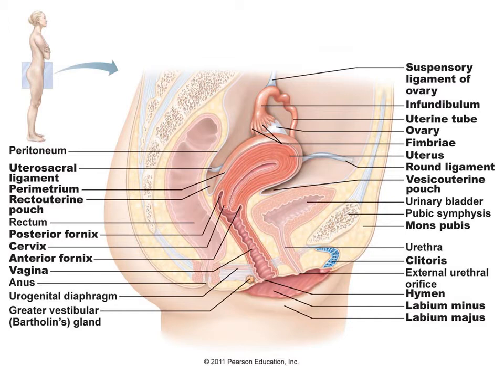To the side of the uterus is the ovary and the fallopian tubes. In front, the vagina, and tucked under the uterus is the urinary bladder and the urethra opening to the outside. From the anterior or front, the three openings in the female are the urethra, then the vagina, and then the anus.